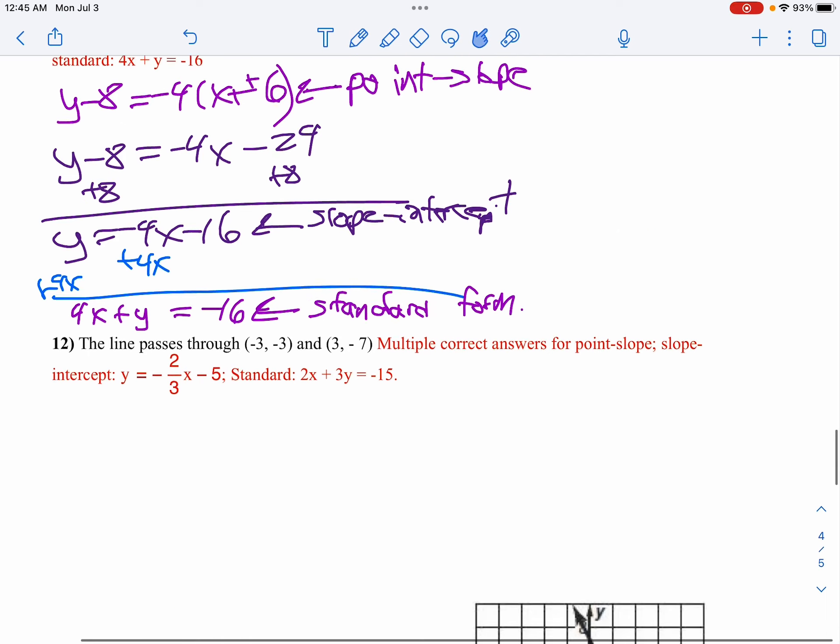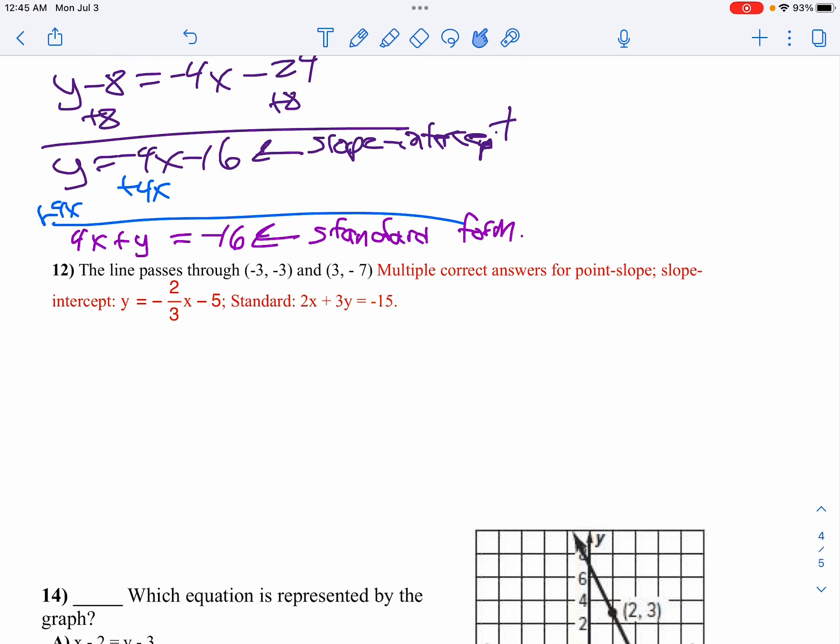Now on the next one, they're giving us 2 points. But we start off the same way. But I think what I'll do is I will write the slope first. So to find the slope, we subtract our y. So negative 7 minus negative 3 all over 3 minus negative 3. So when we do that, we get 10 over 6, which actually is going to be 10 divided by 6 would be 5 over 3.